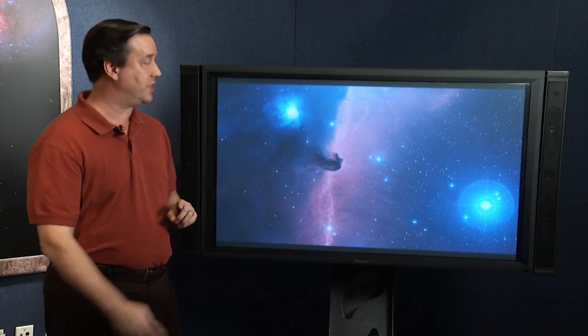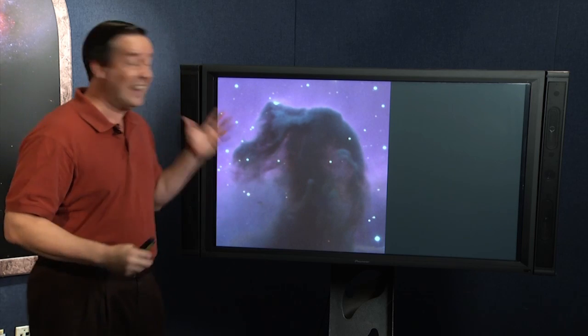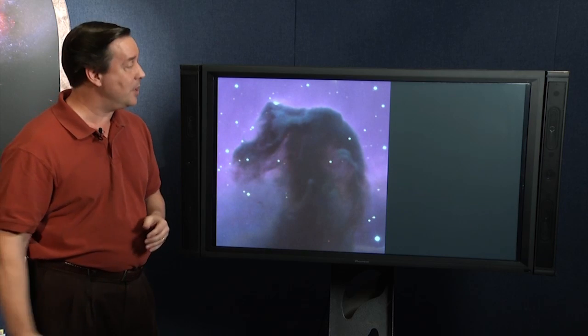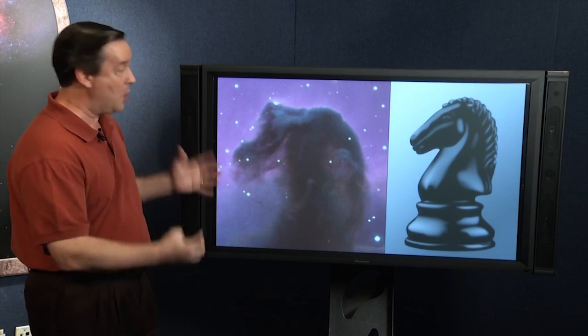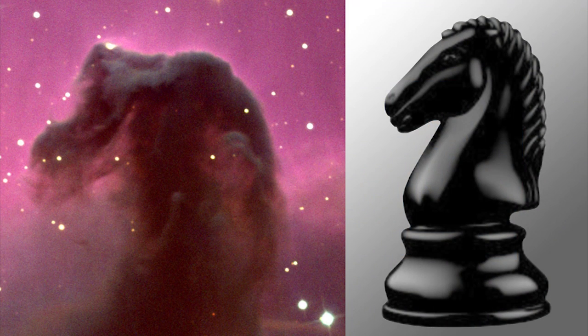So you can't look through the dark dust cloud to see things in the background. One of the really nice things about the Horsehead is it actually looks like what it's called. We've got a lot of these nebulas that have these fanciful names and you look at it and go, I don't see it. I'm sorry, this one is really obvious. Matter of fact, I think it looks very much like the chess piece for a knight. There you go, Horsehead, it actually looks like what it's supposed to be.